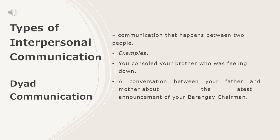The first type of interpersonal communication is dyad communication — communication that happens between two people. Examples include when you console your brother who is feeling down, a conversation between your father and mother about the latest announcement of your barangay chairman, or a conversation between you and a friend who is sharing a secret with you. That is dyad communication — it typically involves just two people.